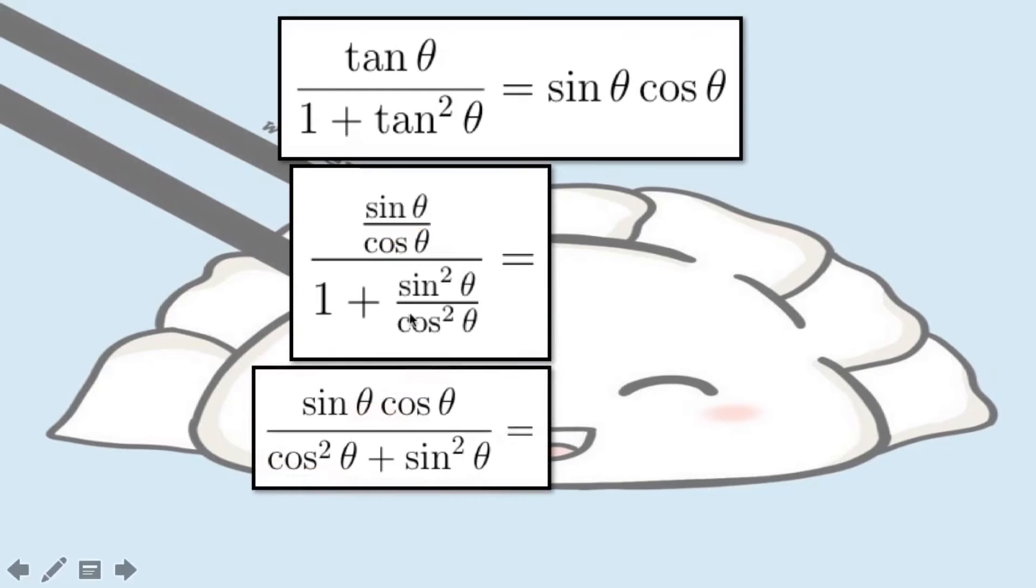So in the next step, after multiplying both the numerator and the denominator by cosine squared theta, we're going to arrive with sine theta cosine theta over cosine squared theta plus sine squared theta equals the original given.